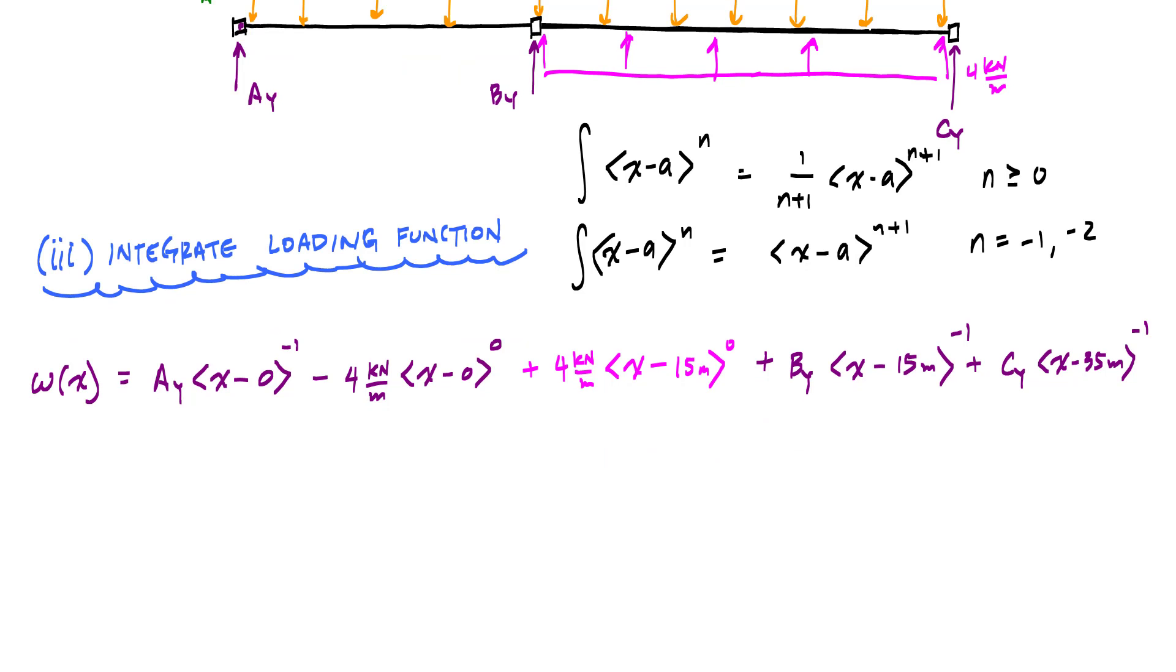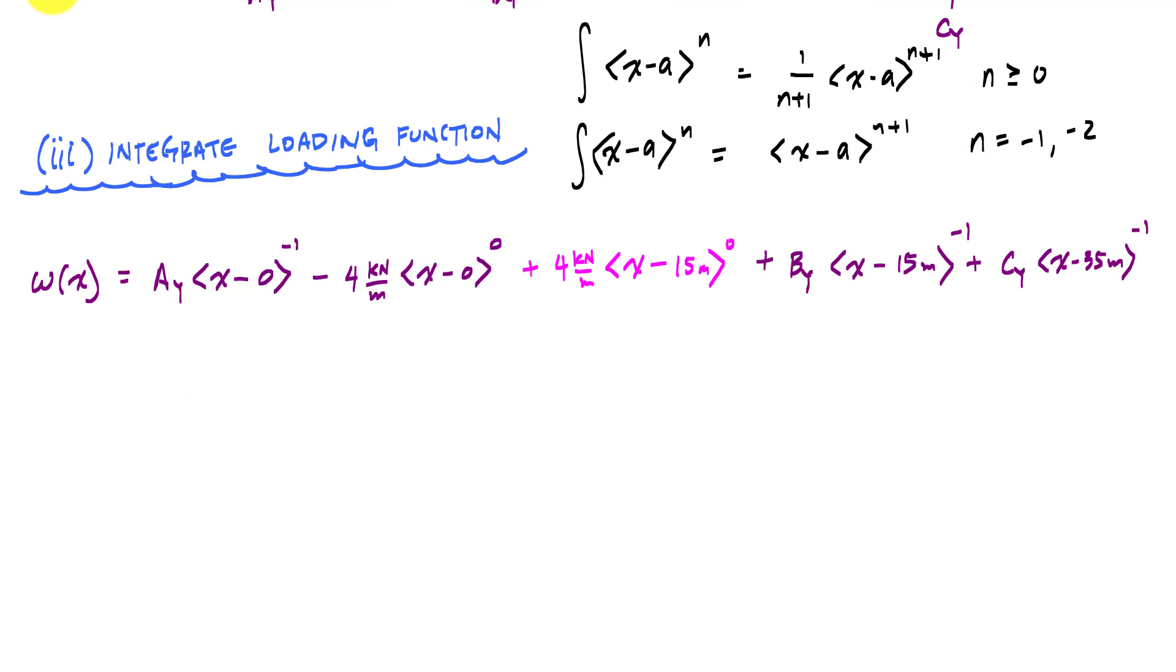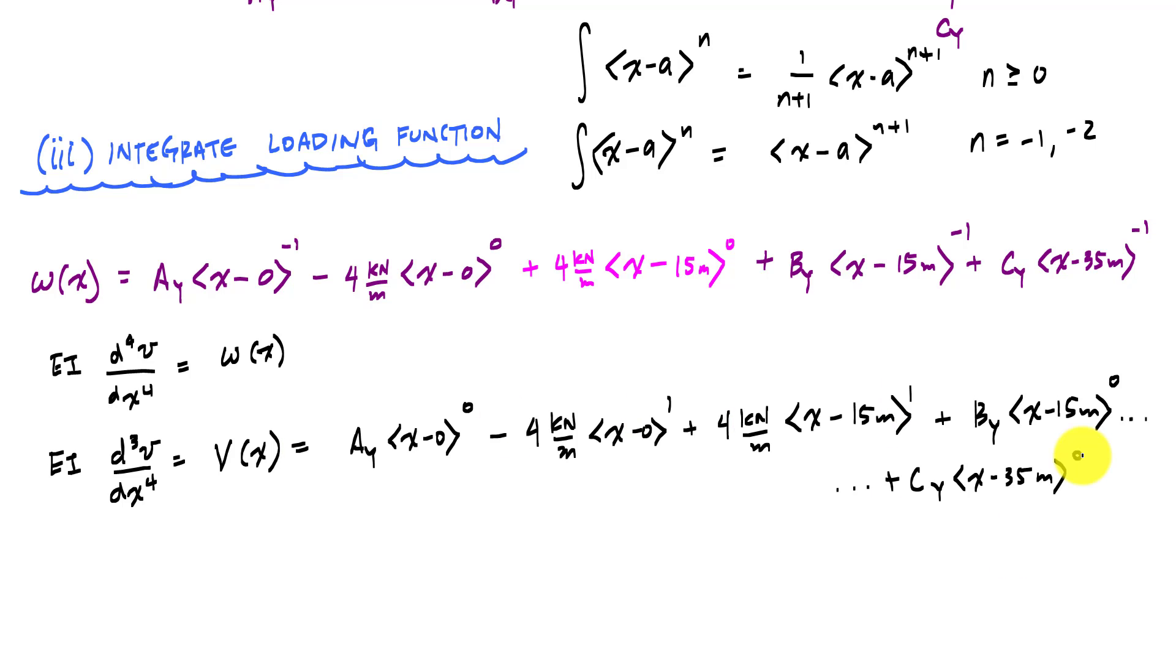So here, I know at least from my loading function, the relationship that I know is that the fourth derivative of the displacement is equal to the loading function. And so if I take one antiderivative or integral away, which is the same thing as the shear function. One antiderivative of this would be, and for the shear function, we don't include a constant of the integration because we've already accounted for the boundaries with the support reaction. Same thing with the moment. So here now, if I take another antiderivative, this is a moment function here. And this will be, and there is my moment function.